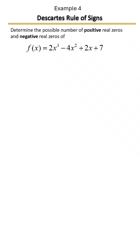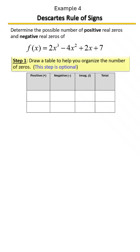Here we're going to determine the number of possible positive and negative real zeros of this polynomial. Step one, let's get our table up so we can organize our zeros.